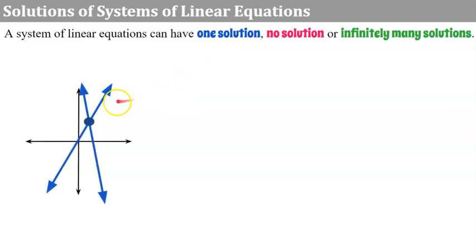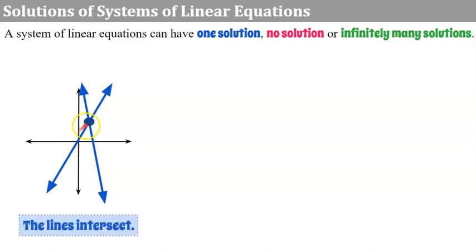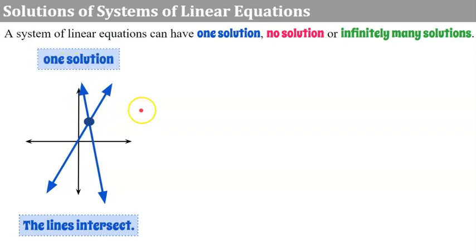The first is one you're probably the most used to. You graph or solve, and you get one point. The lines intersect at that one point of intersection, and that is one solution. You give an ordered pair as your solution.